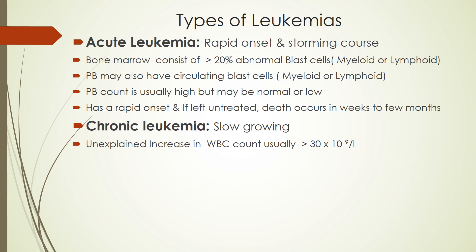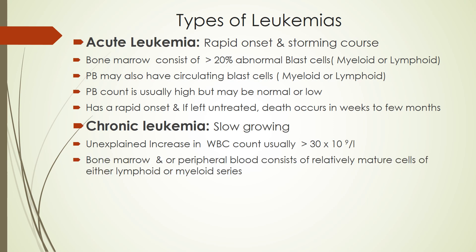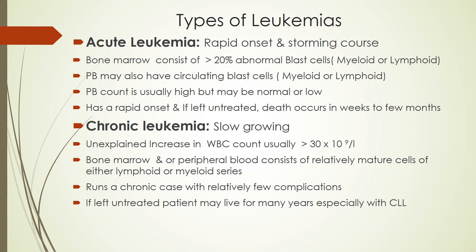Chronic leukemias are slow growing, with an unexplained increase in white blood cell count, usually more than 30 × 10⁹ per litre. Bone marrow and peripheral blood consist of relatively mature cells of either lymphoid or myeloid series. If left untreated, the patient may live for many years — particularly in chronic lymphocytic leukemia. As the patient lives longer, more genetic abnormalities may occur, which may transform chronic leukemia into acute leukemia.